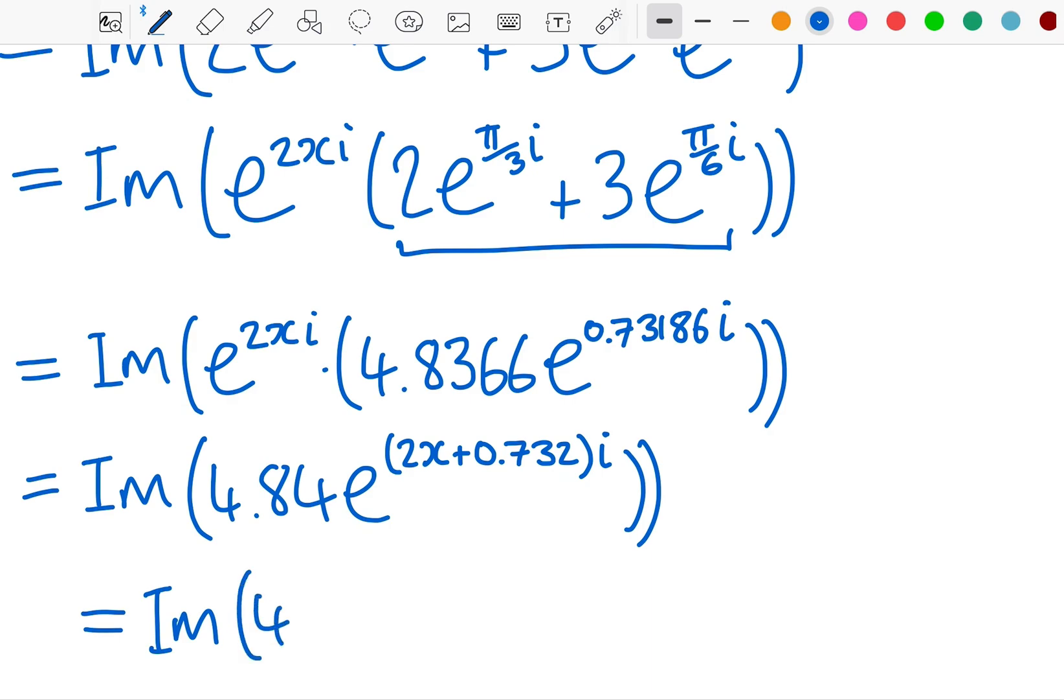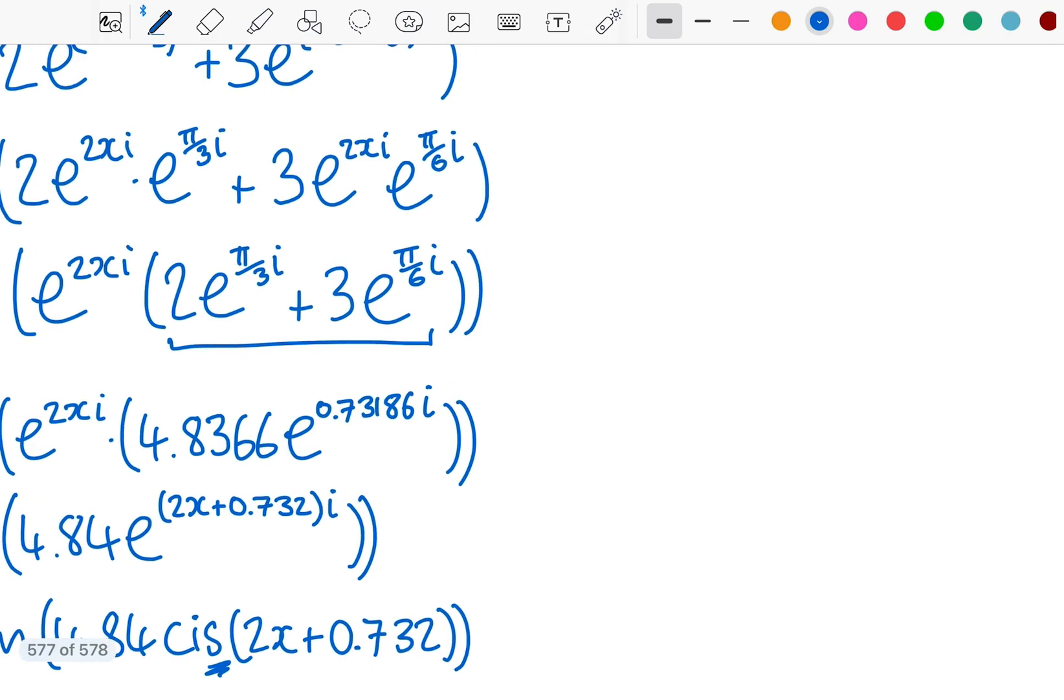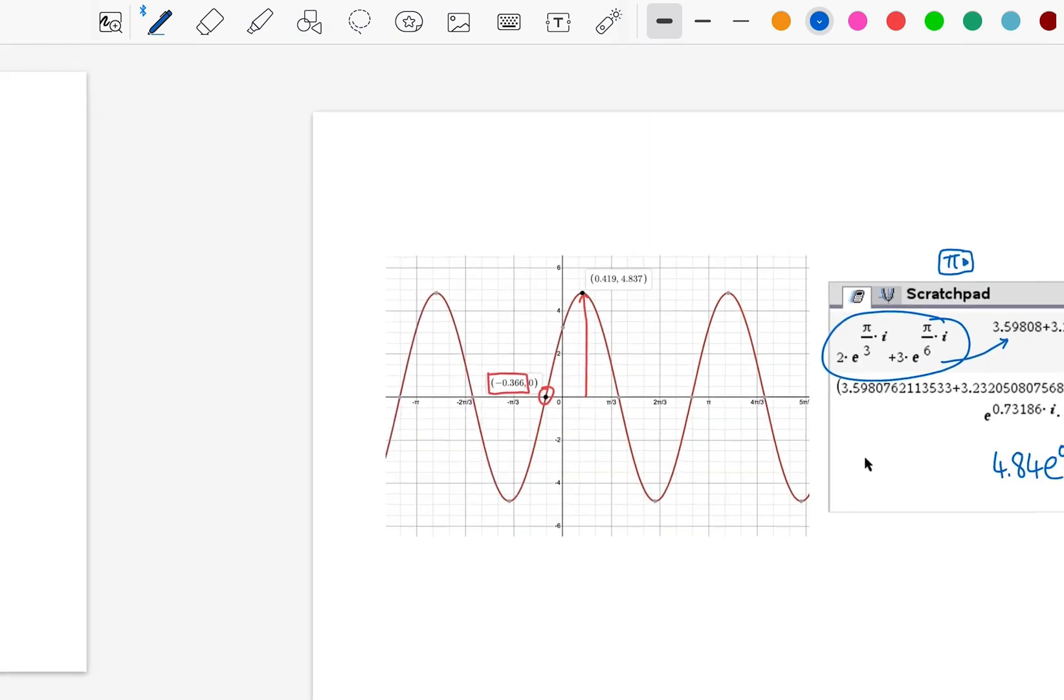Just to be clear, I could also write it in polar form with a cis, like this. If you need it, reminding that it is just the sine part of this, the imaginary part. So the imaginary part of that. Therefore, f(x) = 4.84 sin(2x + 0.732). And we have combined them into one.